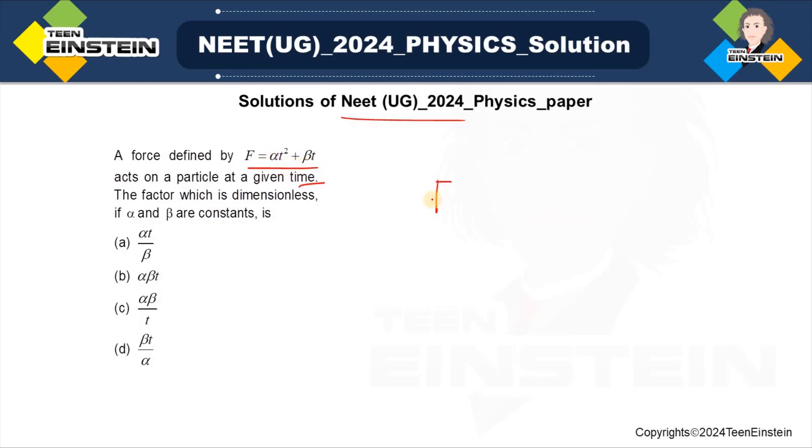So, F is force, right? Force is equal to alpha T squared plus beta T. In this case, you have to understand, since these two factors are additive, each factor will have dimension of force.